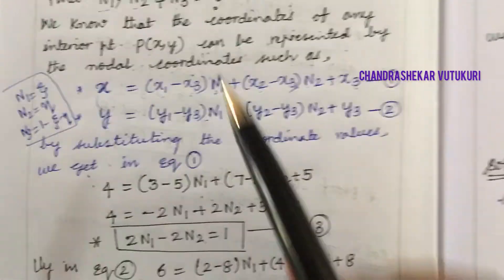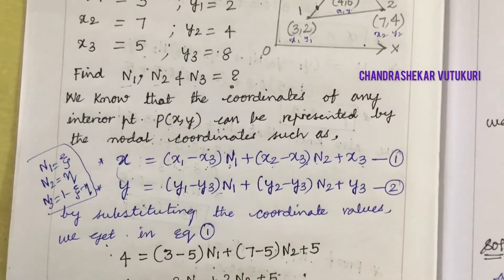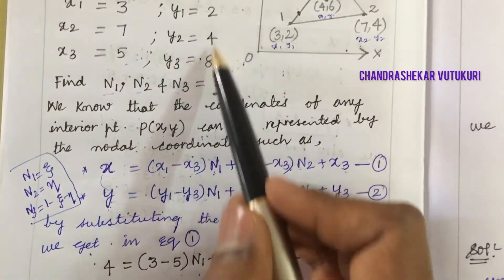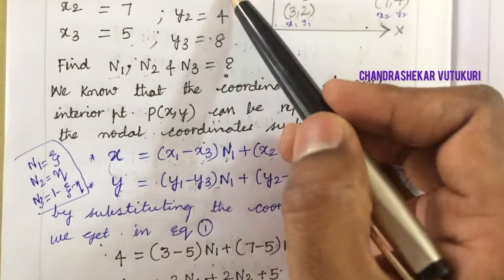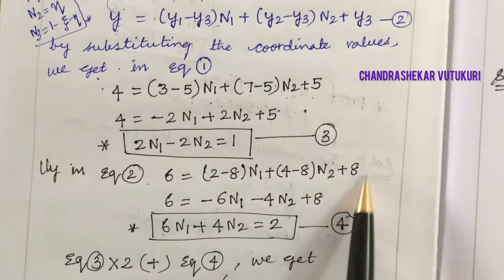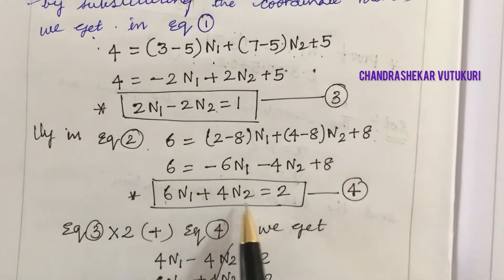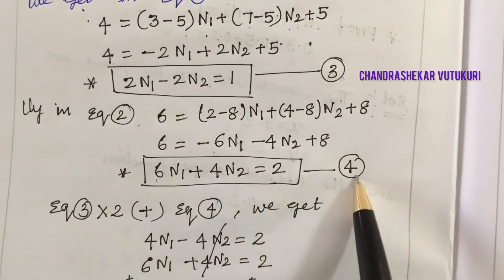Similarly, we substitute the y value of 6. y1 minus y3 is 2 minus 8 times N1, and y2 minus y3 is 4 minus 8 times N2, plus 8. Upon putting the values, we get two unknowns again. I've written this as equation 4.